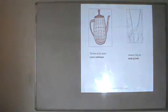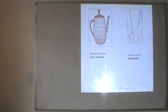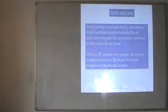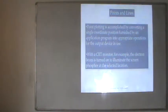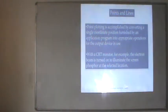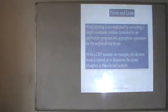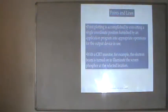Looking at this object — a jug — the lines seem as if they are not straight. But if you go deeper, the lines are actually made up of pixels and they are straight. Point plotting is accomplished by scan-converting a single coordinate position furnished by an application program into appropriate operations for the output device in use. With the CRT monitor, the electron beam is turned on to illuminate the screen phosphor at the selected location.